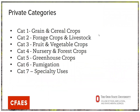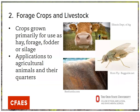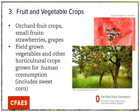Now we're going to go through the private categories individually. Category 1 is grain and cereal crops — required for any restricted use pesticide applied to row crops such as corn, grain sorghum, and soybeans. Category 2 is for any restricted use pesticide in forage crops and livestock — crops grown primarily for use as hay, forage, fodder, or silage, and any application made to the animals themselves and their living quarters. Category 3 is fruit and vegetable crops — orchards, small fruits, brambles, field vegetables, and other horticultural crops grown for human consumption, and this includes sweet corn.